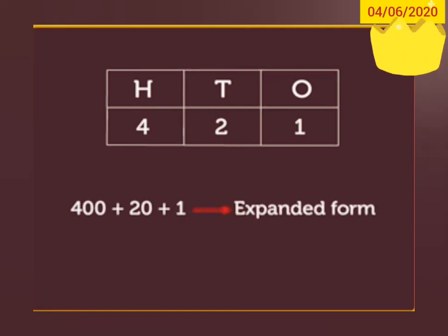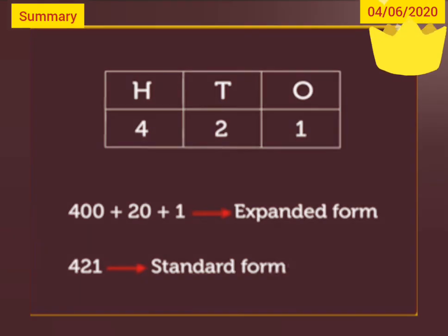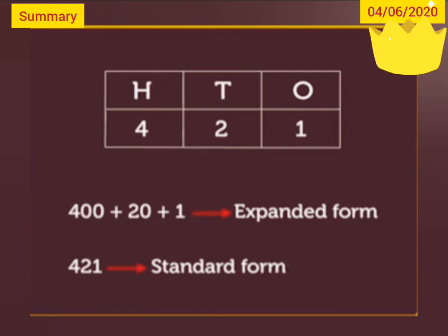And the number 421 is called the standard form. When the number is in its expanded form, we can write it in the standard form by placing the digits in the respective columns of the place value chart. I hope that the concept of expanded form and standard form are clear to all of you.